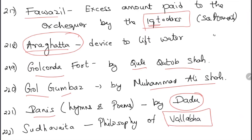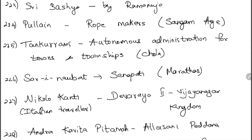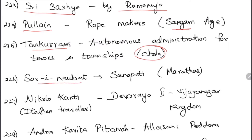Golkonda Fort was built by Quli Qutb Shah. Gol Gumbaz was built by Muhammad Ali Shah. Banis were hymns and poems written by Dadu. Shuddhadvaita was a philosophy by Vallabha — similar to Vishishtadvaita of Ramanuja. Sribhasya was written by Ramanuja. Pulain were rope makers in the Sangam age. Taniyurs were autonomous administrative units for towns during the Chola period.